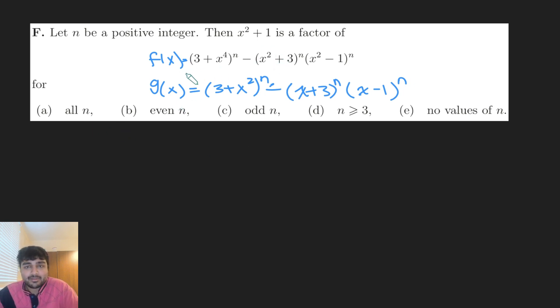...then x + 1 will be a factor of this. So if x² + 1 divides this thing, then x + 1 will divide this, because g(x) here is precisely, or sorry, f(x) is precisely g(x²). And so if x² + 1 divides f(x), then x + 1 will divide g(x), which basically then tells me that g(-1) should be 0.